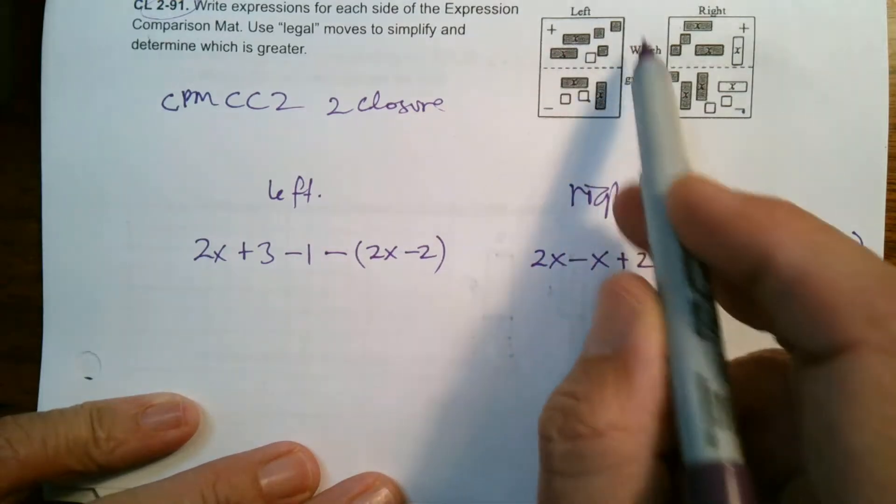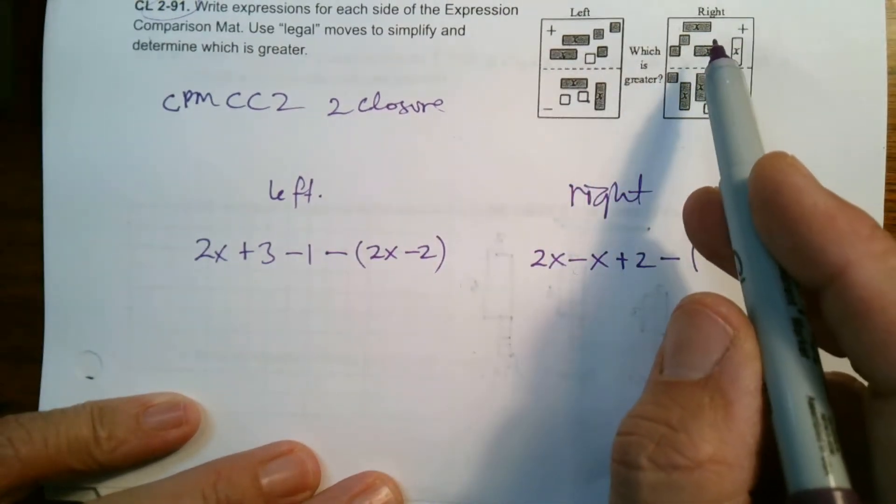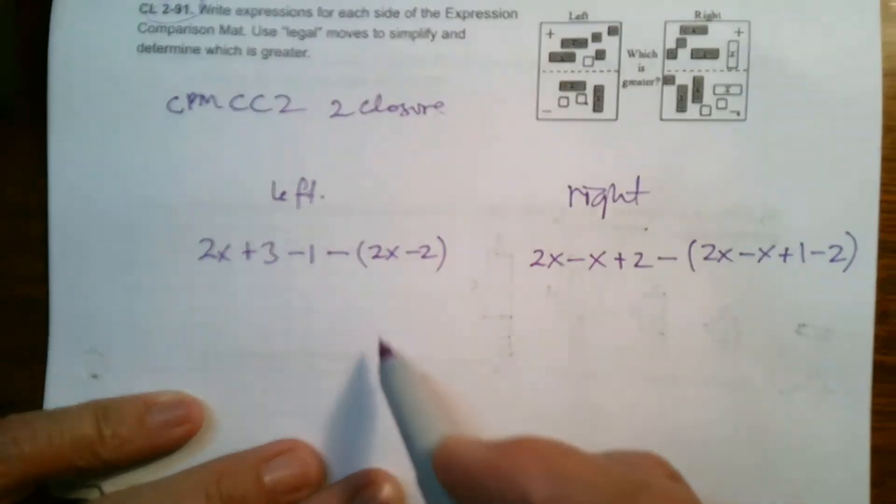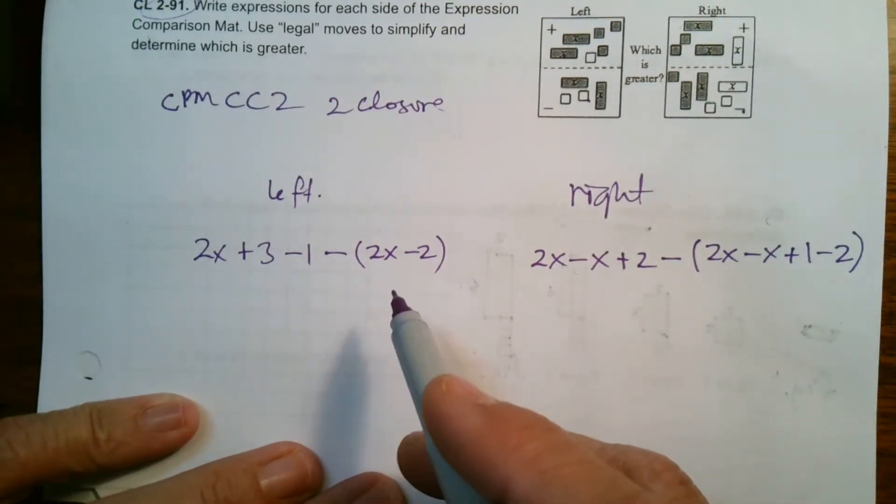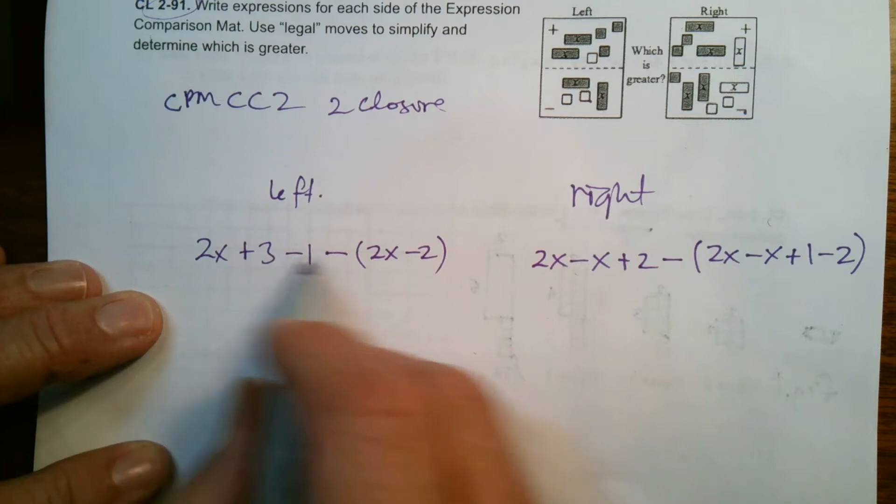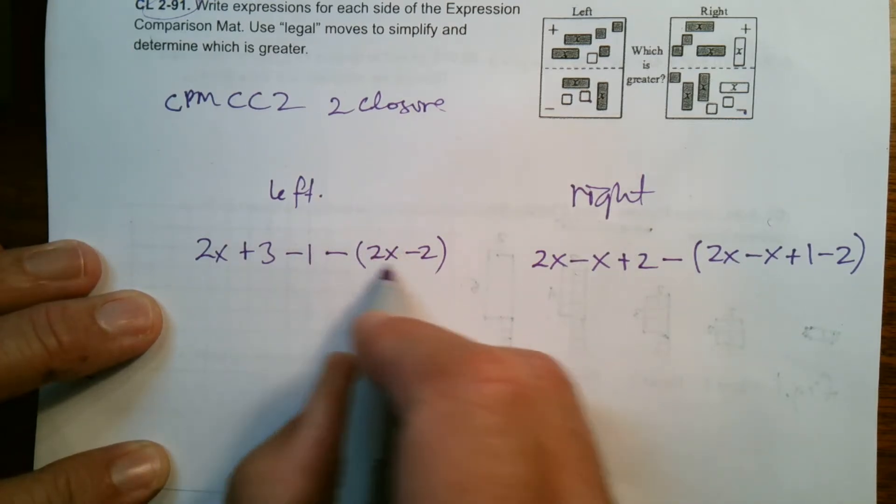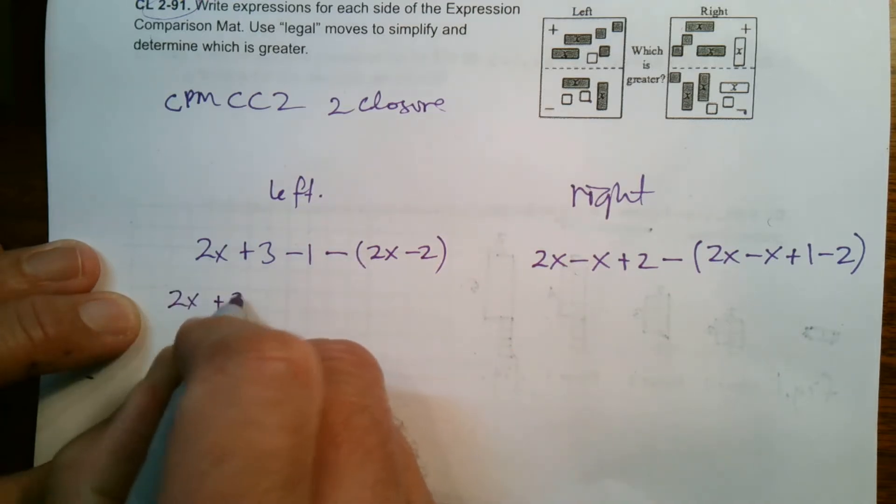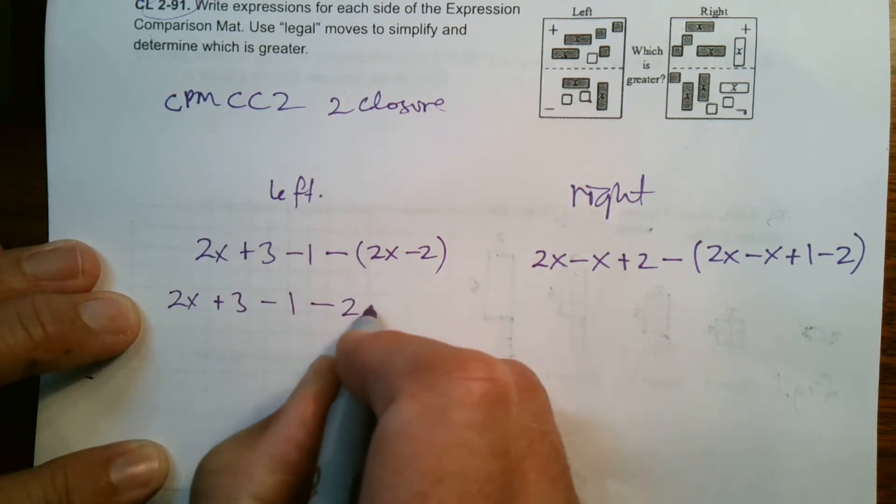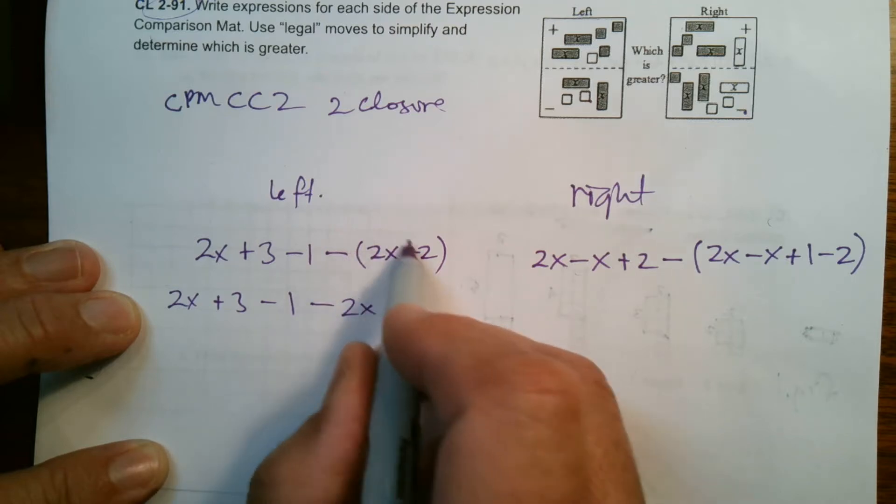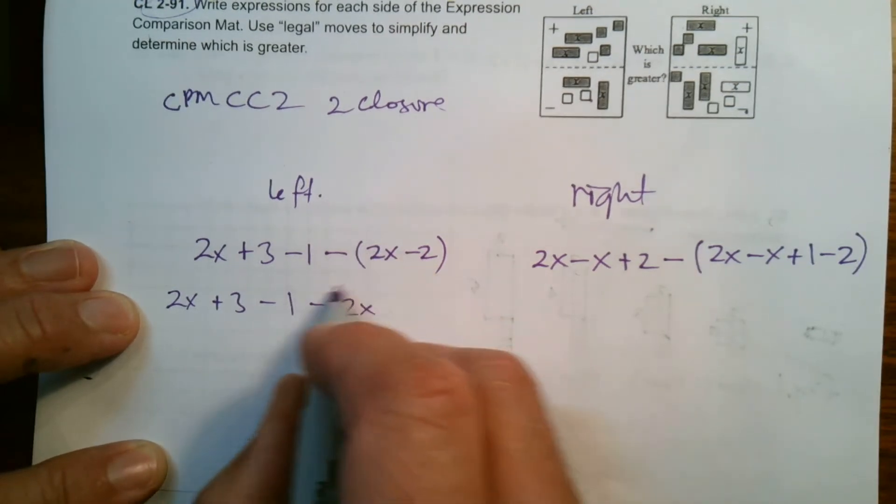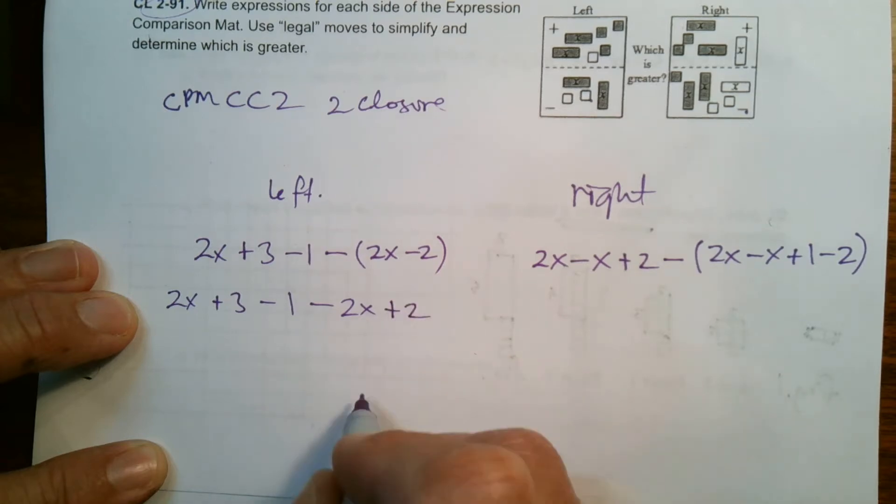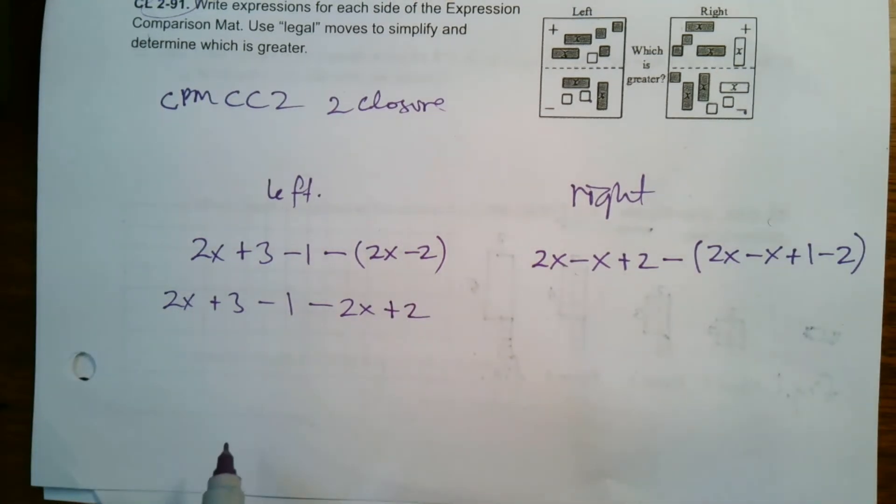So we can then take and do some simplification using the mats, as well as I'm going to show you how to do it using algebra. So I'm going to do that first, the algebra part. The first thing I want to do is eliminate these parentheses by distributing that minus. So I'm going to rewrite it: 2x + 3 - 1 - 2x. But then we have a minus minus or minus negative, so that becomes plus two.